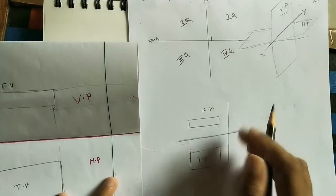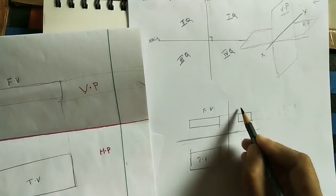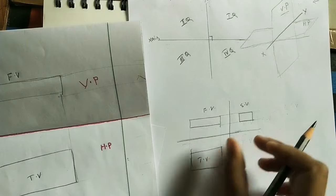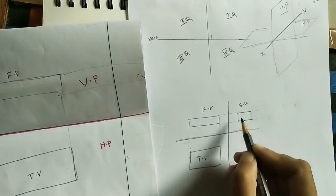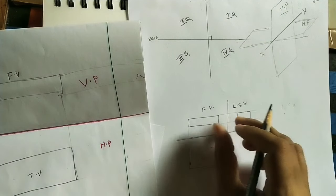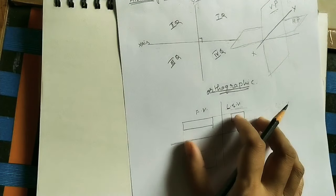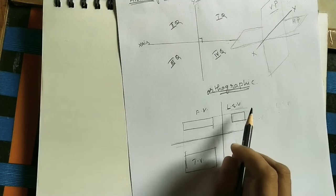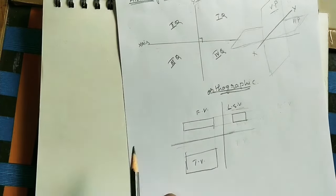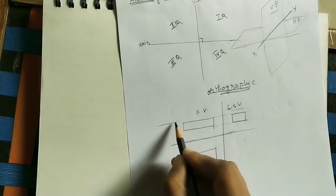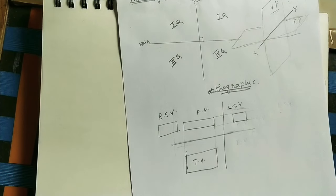We need to draw one more reference line here so we can see the side view — this smaller rectangle is the side view, placed on the same projector line. So front view, top view, and side view together form the orthographic projection. If this side view is on the left side of the object, for us it is the left side view, but in the diagram we draw it on the right side. If we keep the profile plane on the right side, we see the right side view on the left of the diagram — always remember this.